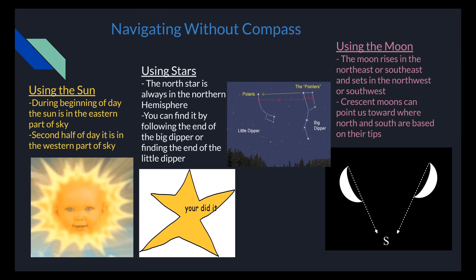Navigating without a compass. You can use the sun to navigate without a compass because during the beginning of the day the sun is in the eastern part of the sky, and during the second half of the day it is in the western part of the sky. You can use stars to find your location because the north star is always in the northern hemisphere. You can find it by following the end of the Big Dipper or finding the end of the Little Dipper.